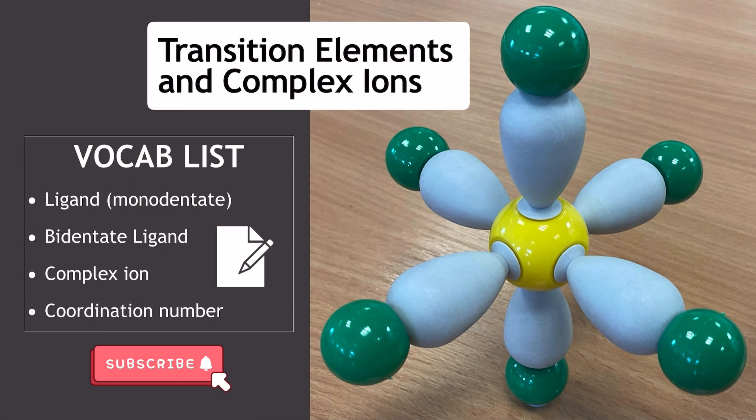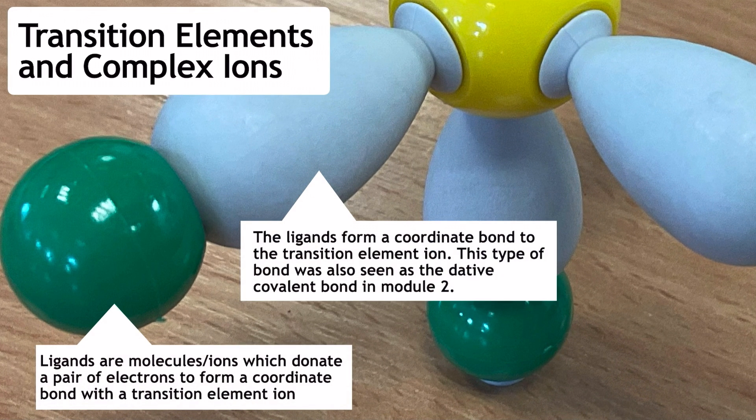Moving on, we're going to talk about transition elements and complex ions, and we need to make sure that we can use all of the vocab in this list effectively in order to answer those longer exam questions. Around the outside of the complex ion structure, we have ligands. Now ligands are molecules or ions which donate a pair of electrons to form a coordinate bond with a transition element ion.